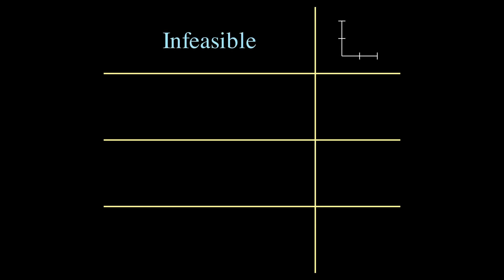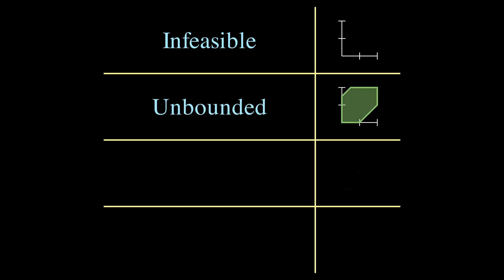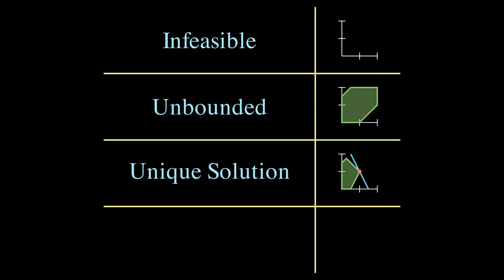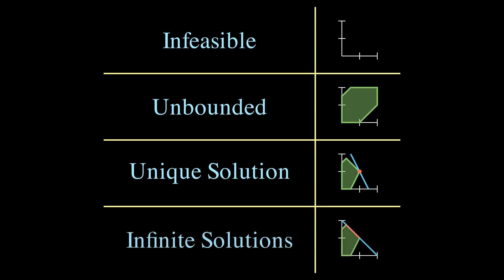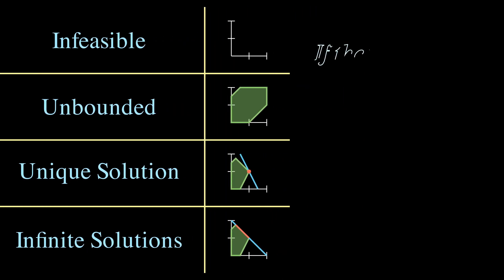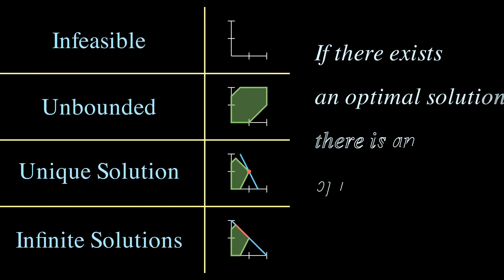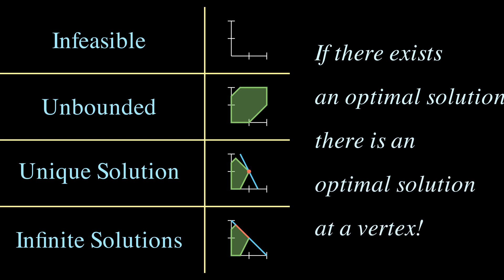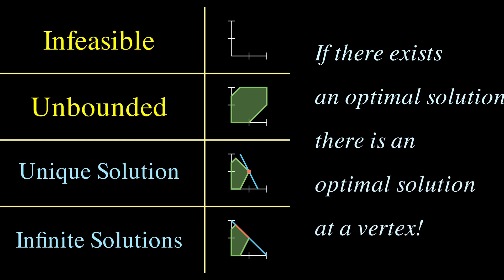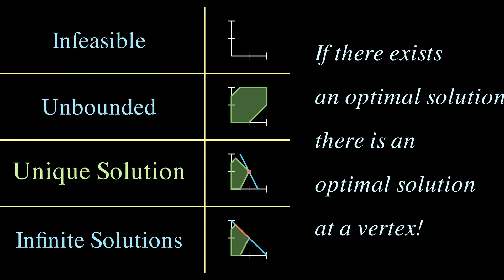Let's recap. A linear program can be infeasible, it can be unbounded, it can have a unique optimal solution at a vertex, or an entire edge or face can be optimal, in which case there are infinitely many optimal solutions. One thing to note: when a linear program does have an optimal solution, there's always an optimal solution at a vertex. In the first two cases the linear program doesn't have an optimal solution. When it has a unique optimal solution it's at a vertex, and when there are infinitely many optimal solutions, there are optimal solutions at vertices. This implies we can just check the vertices of the feasible region for the optimal solution.